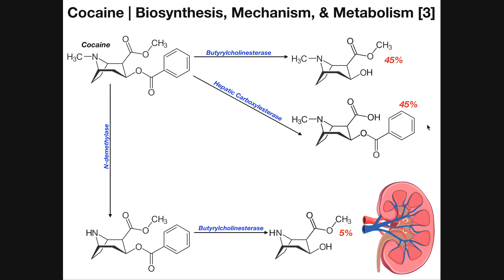The second enzyme, called hepatic carboxylesterase, is responsible for the next 45% of the metabolism and elimination. What this enzyme does is target the other ester — not the benzoyl ester — and removes the methyl group from the ester, generating a carboxyl group, which is more water-soluble than when it had the methyl group. This occurs in the liver, not the serum. This metabolite of cocaine is water-soluble enough to be removed via the kidneys. Collectively, butyrylcholinesterase and hepatic carboxylesterase account for 90% of the metabolism of cocaine.